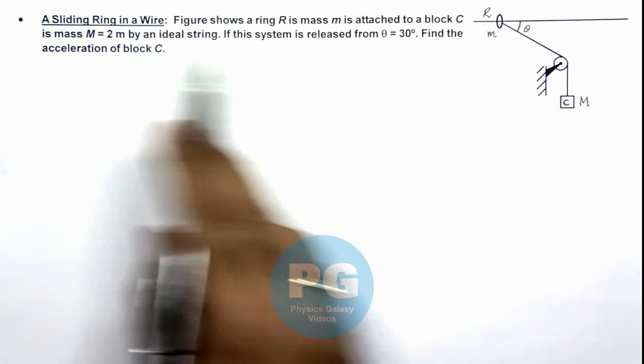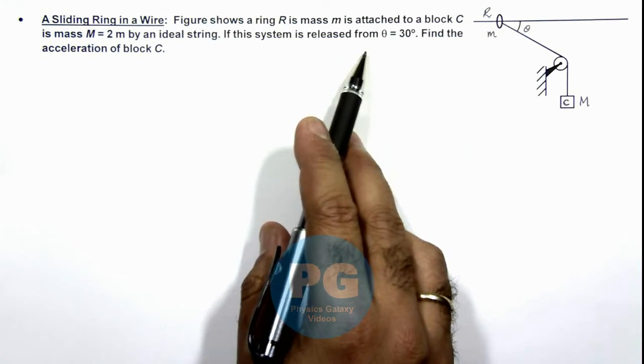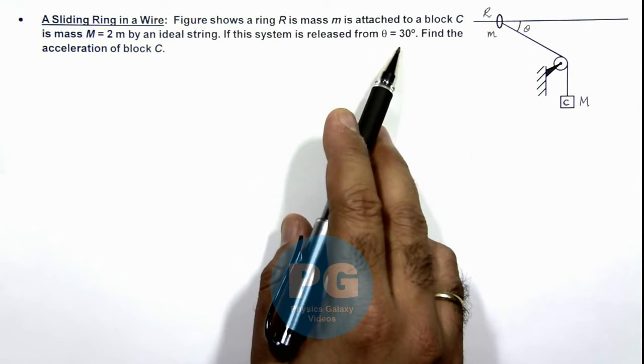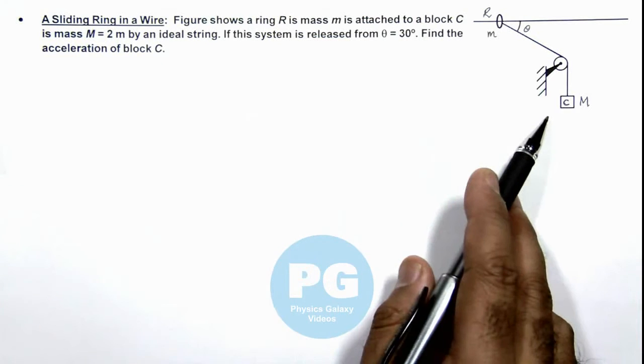By an ideal string, if the system is released from theta equal to 30 degrees, we are required to find the acceleration of block C.